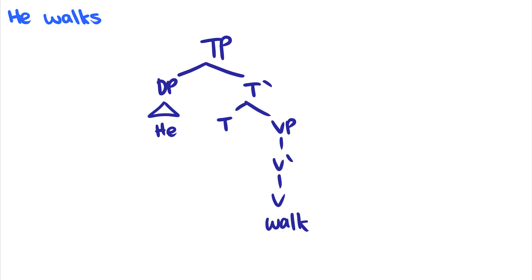How do we do present tense? For something like 'he walks,' we could say there's an -s morpheme that moves down, but this isn't generalizable to all languages — they don't all have this inflectional morphology. So we just use '-past,' and it's important that we don't use '-present' or '+present' here. We just want the distinction between '+past' and '-past.' Some languages differentiate between future and non-future, using '+future' or '-future' instead. So this '-past' goes down to 'walk' and on the surface form we get 'he walks.'